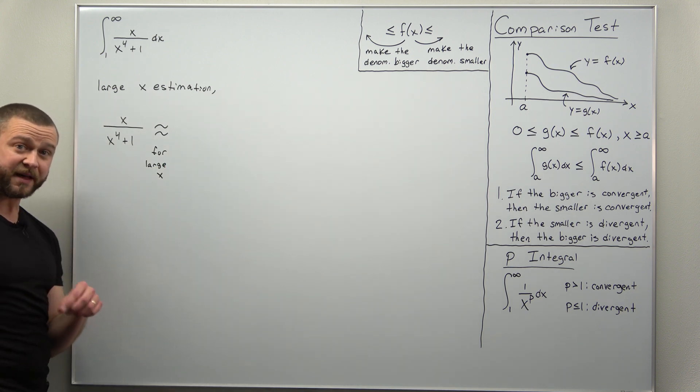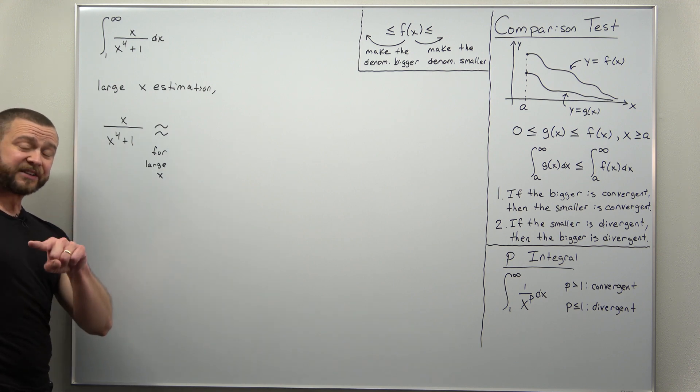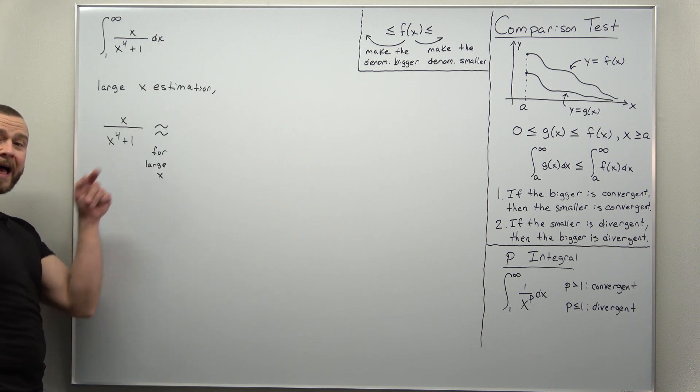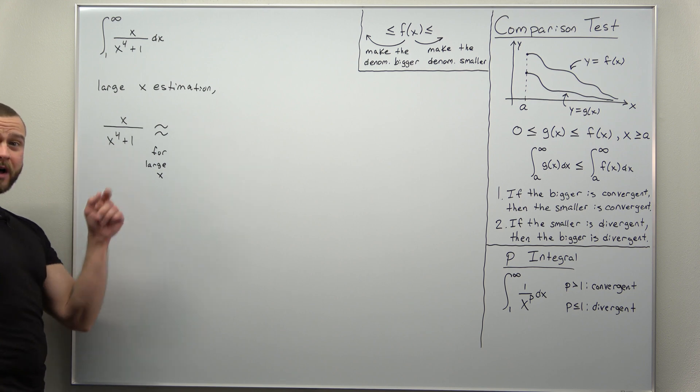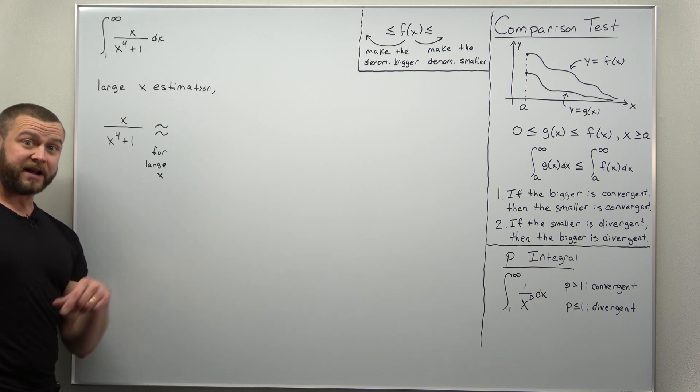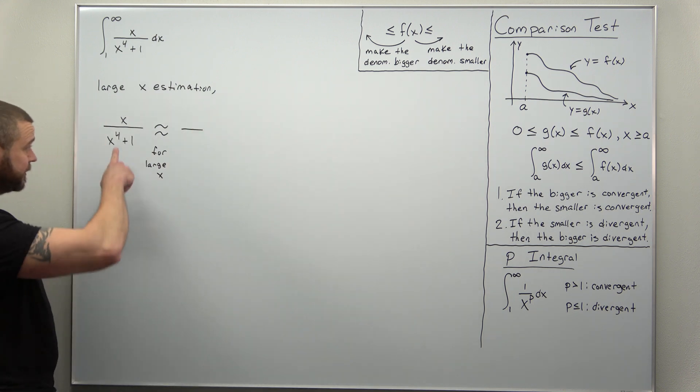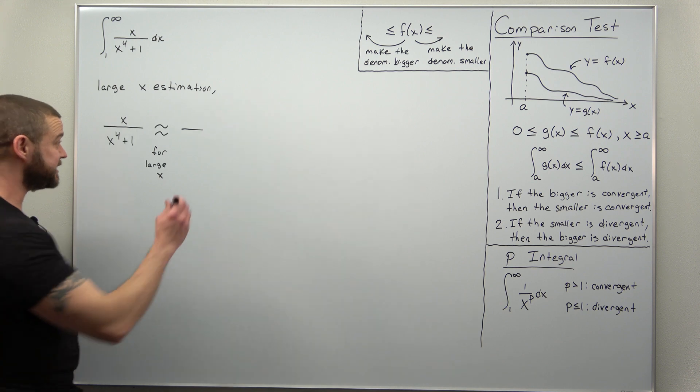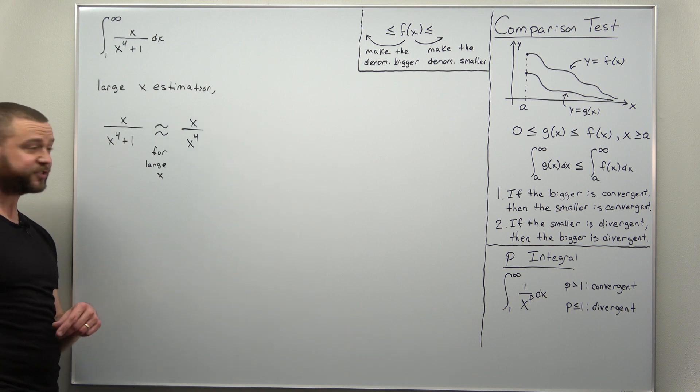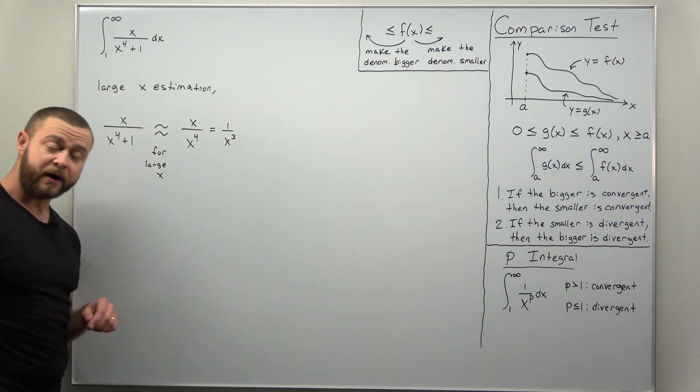So, in other words, when x is really big, think of x as being maybe like a million. Notice we have in the denominator, x to the fourth. Now, if x is big, x to the fourth is way bigger. And then you add a one to that. That one hardly does anything when you have x as a really big number raised to the fourth power. So, for large values of x, the denominator, we can just basically get rid of the one. That's insignificant. The denominator is basically x to the fourth. The numerator behaves just like x. And notice this simplifies to one over x cubed.